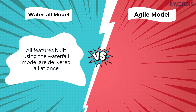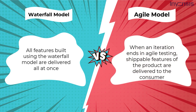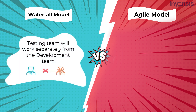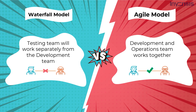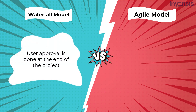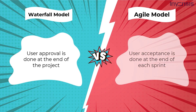Following the lengthy implementation process, all features built using the Waterfall model are delivered all at once. When an iteration ends in Agile, shippable features of the product are delivered to the consumer, and new features are available for use immediately after shipment. In the Waterfall model, the testing team works separately from the development team, whereas in the Agile model both teams work together. User approval is done at the end of the project in Waterfall, and at the end of each sprint in Agile. Both require user approval before going to the production server.